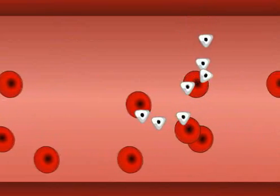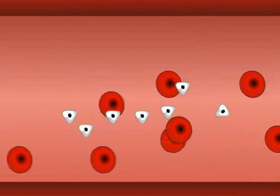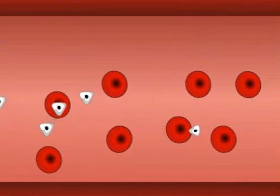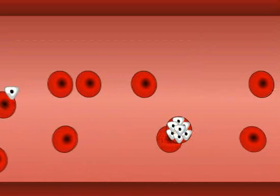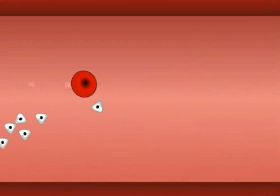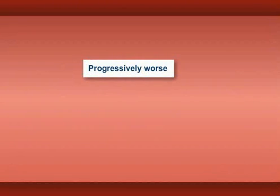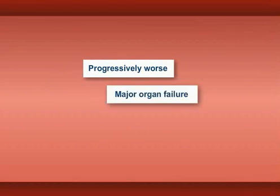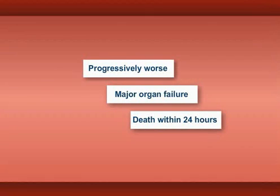Infected red blood cells eventually burst, releasing the merozoites, which infect new cells. This repeating blood stage cycle destroys massive numbers of red blood cells. The symptoms become progressively worse as the disease continues. Major organ failure may occur, and in severe cases, humans can die within 24 hours of the initial onset of symptoms.